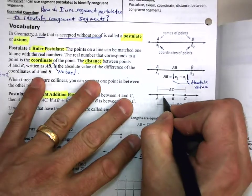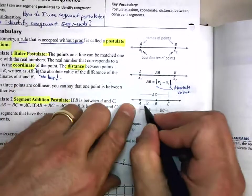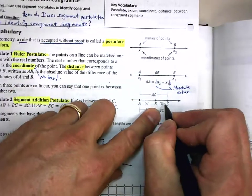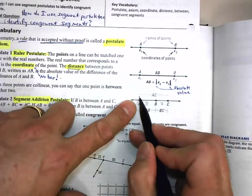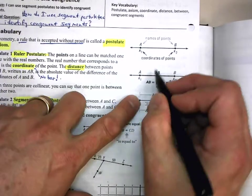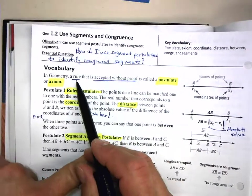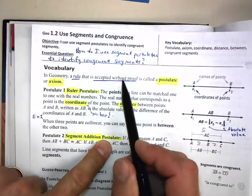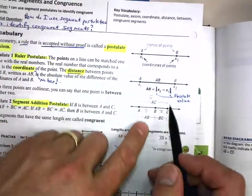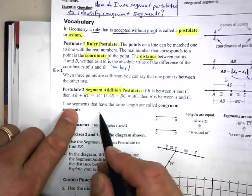In other words, if this was 3 inches and this was 2 inches, what would be the length of AC? Well, of course you'd be 5. And that's why we call it a postulate—it's a rule that is accepted without proof. It's obvious.